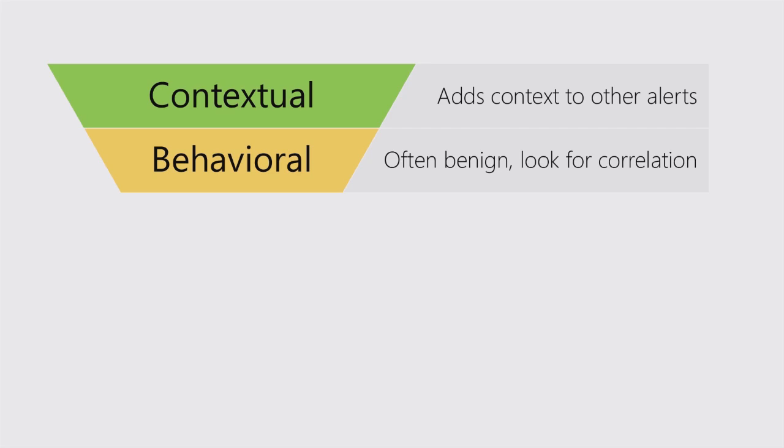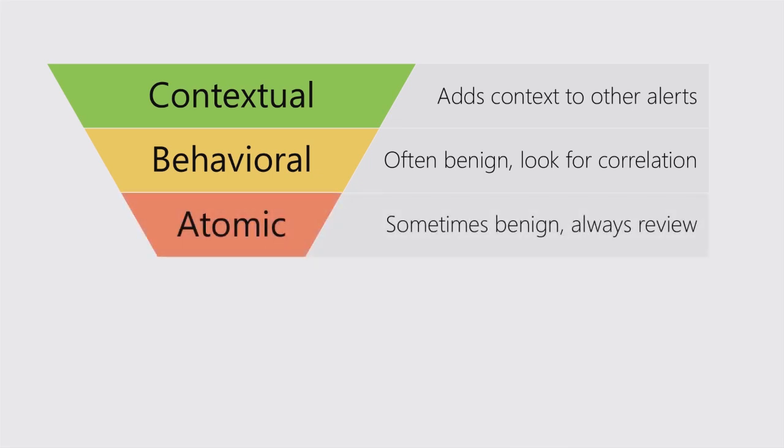We have behavioral detections — things that often happen just because an engineer is getting their work done or the environment has changed. Next we have atomic alerts — things we always want to review whenever they happen. For instance, if someone installs a service on a machine, I want an alert that somebody's going to look at. And if that isn't happening across all 350,000 machines in my environment, I'm concerned.